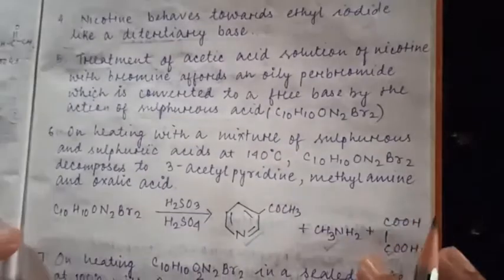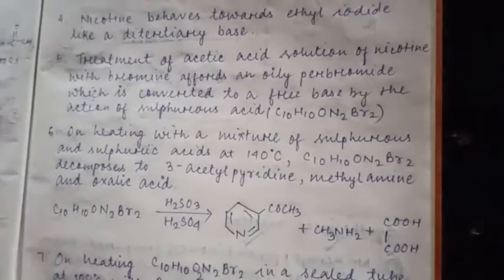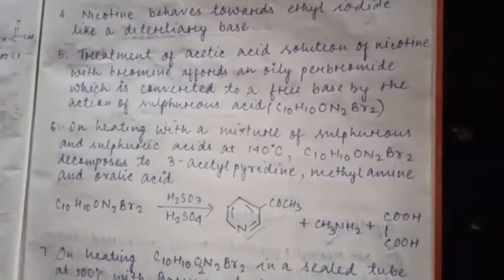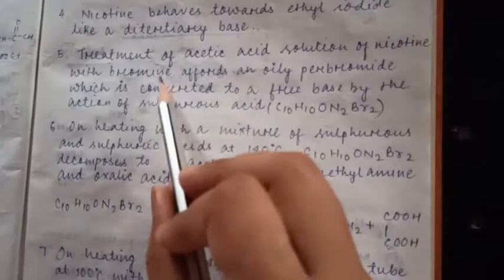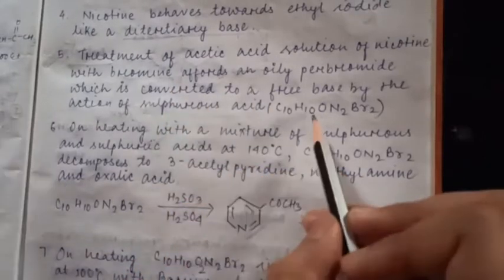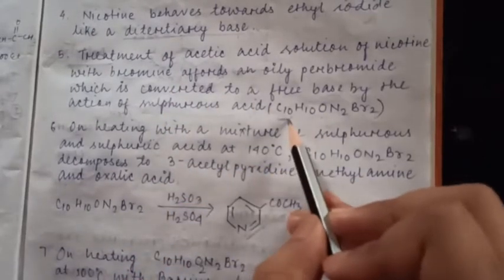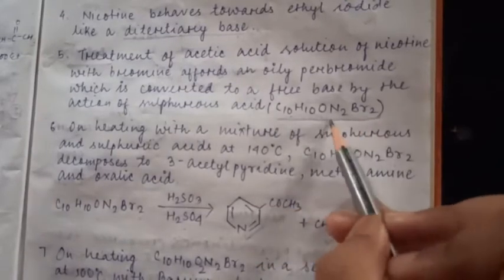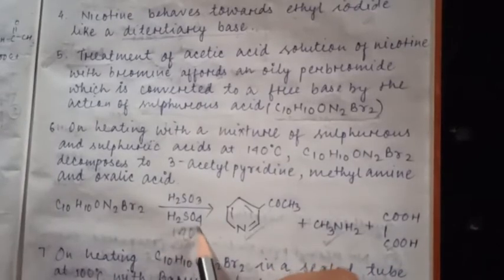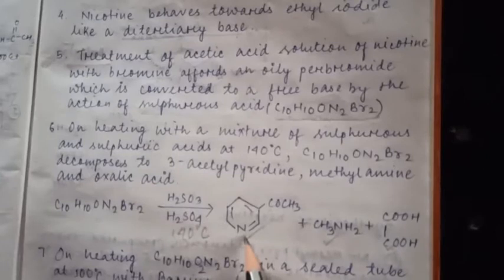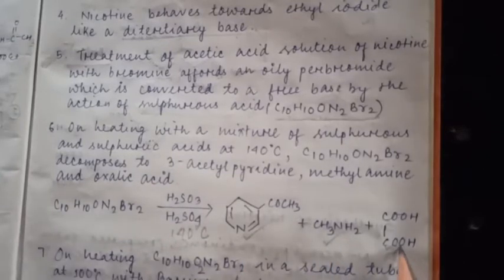Now let's see some reactions. These reactions play a very important role in nicotine structure elucidation. It is shown that upon treatment of acetic acid solution of nicotine with Br2 followed by sulfurous acid, one important component forms with formula C10H10O2Br2. When this is further heated with sulfurous acid and sulfuric acid at 140 degree Celsius, it converts to 3-acetyl pyridine, methylamine, and oxalic acid. So a little later we will understand how these reactions help in structure elucidation.